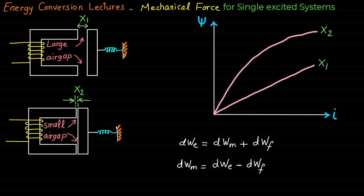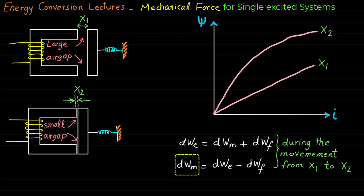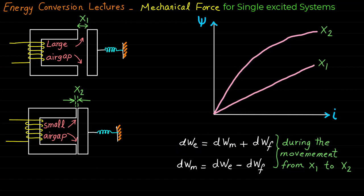Basically, if we identify the change of the field energy DWf and the change of the electrical energy DWe during the movement, the change of the mechanical energy DWm can be identified. Note that the change of these three energies represents the change during the movement from the initial position X1 to the final position X2.